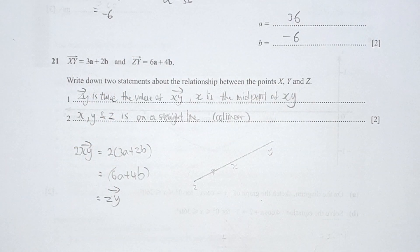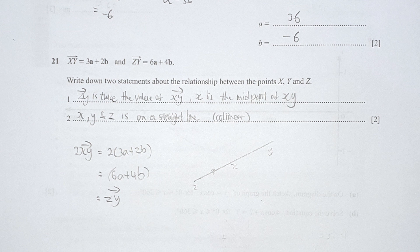Question 21 is tricky—they've changed how they usually ask vector questions. As you can see, the syllabus has changed and they ask more structured questions, assessing your understanding rather than the usual question format. Write down two statements about the relationship between points x, y, and z. First, I noticed zy is twice the value of xy, indirectly hinting that x is the midpoint of xy. Second, after solving enough past years, you notice x, y, z are on a straight line due to the collinear concept.